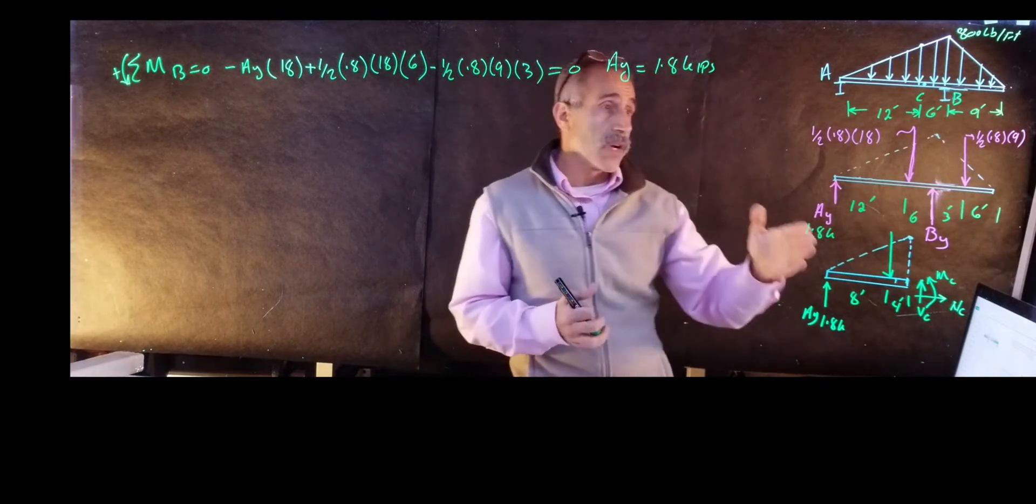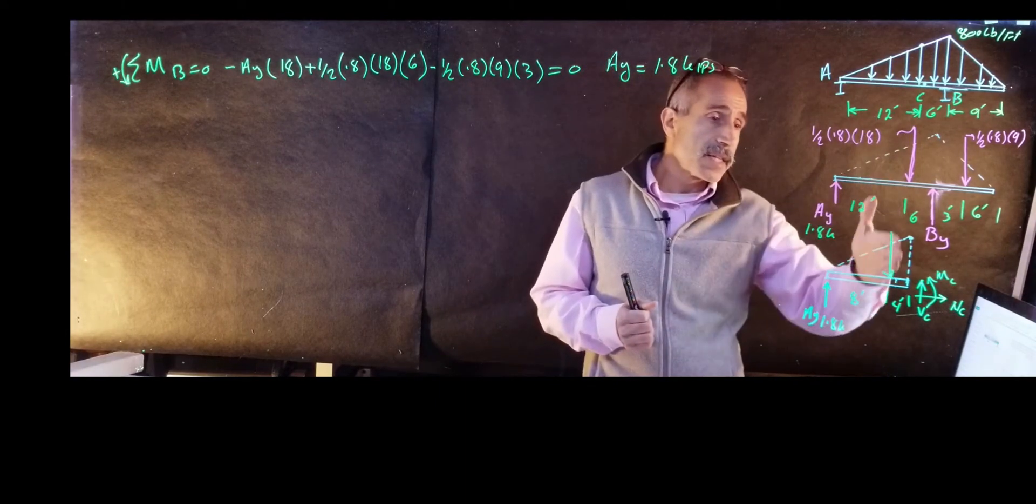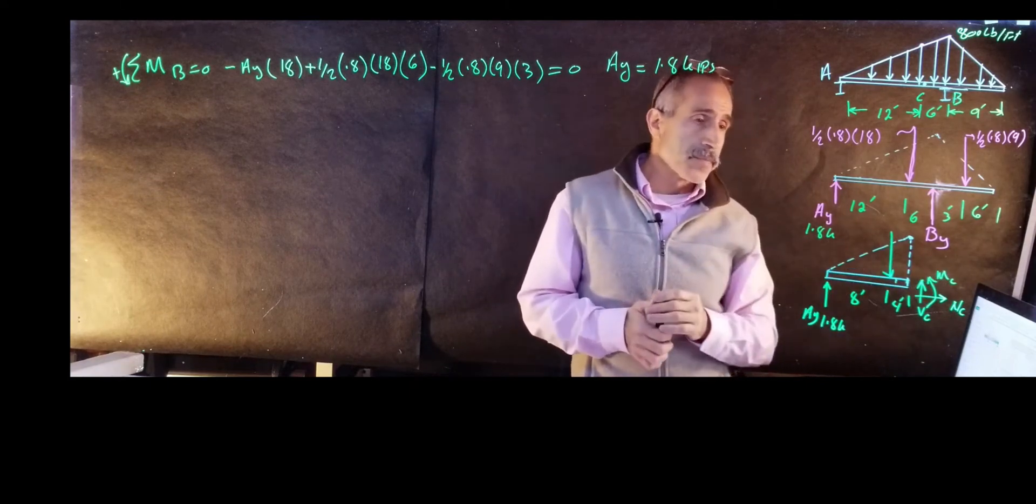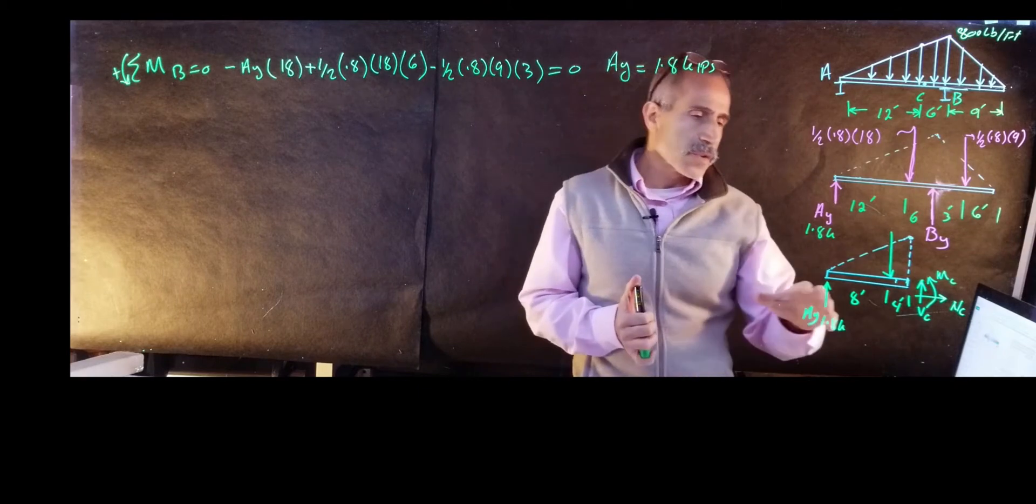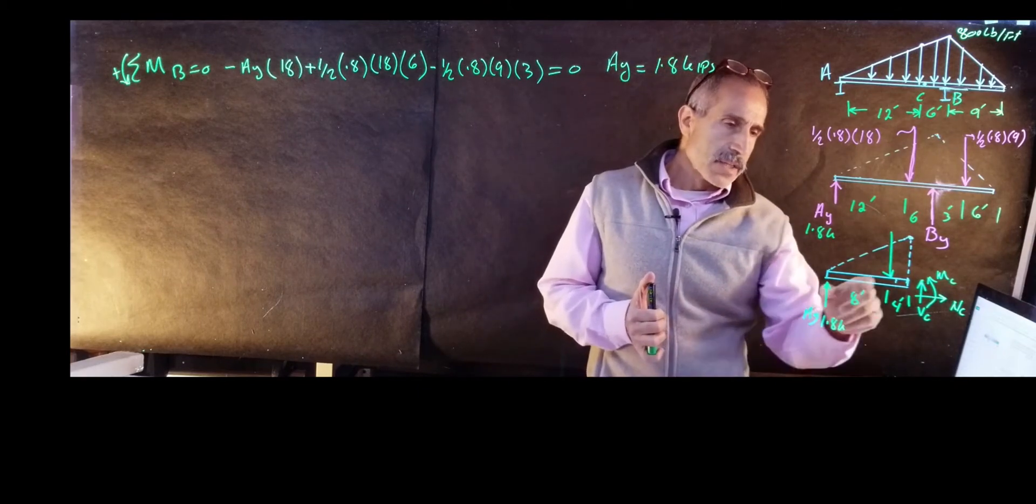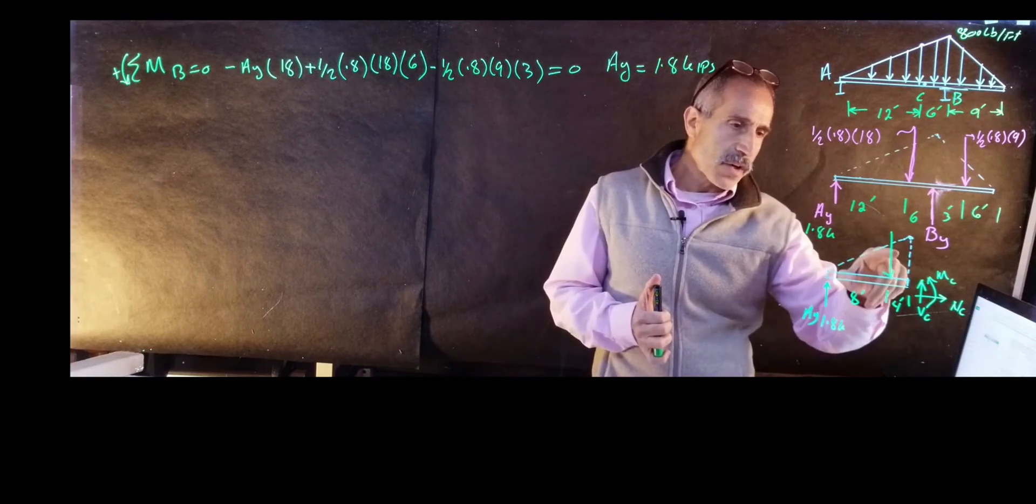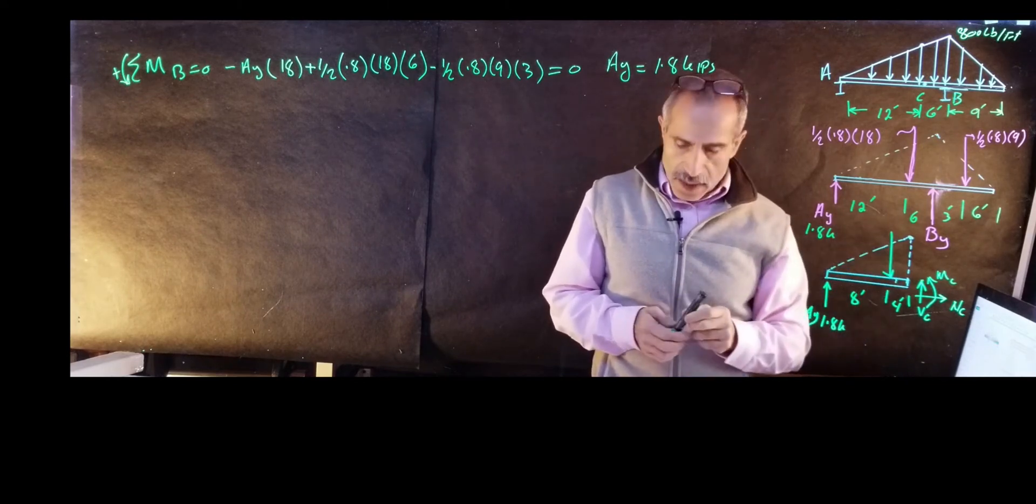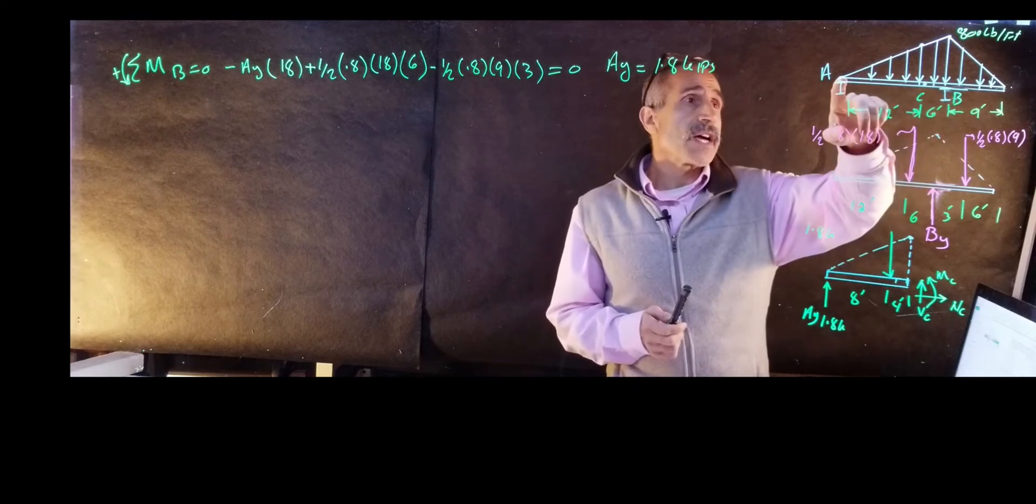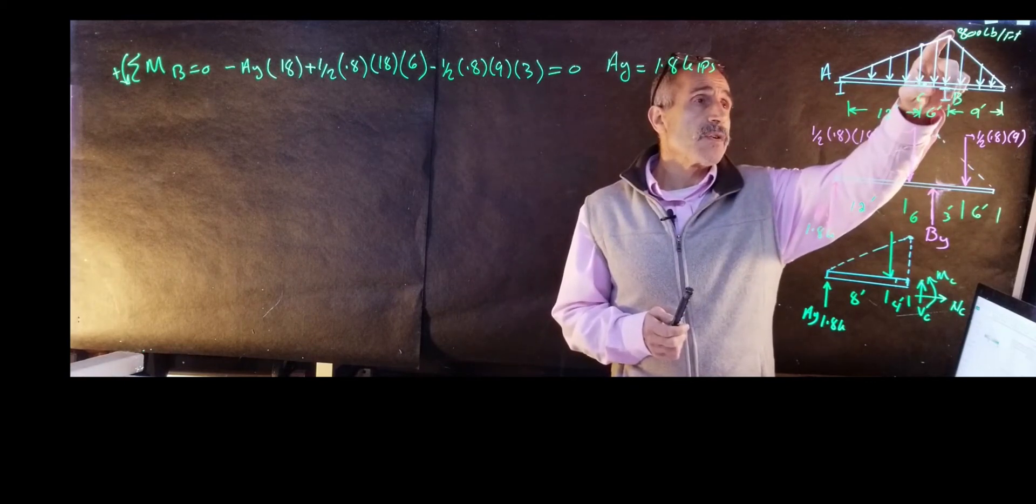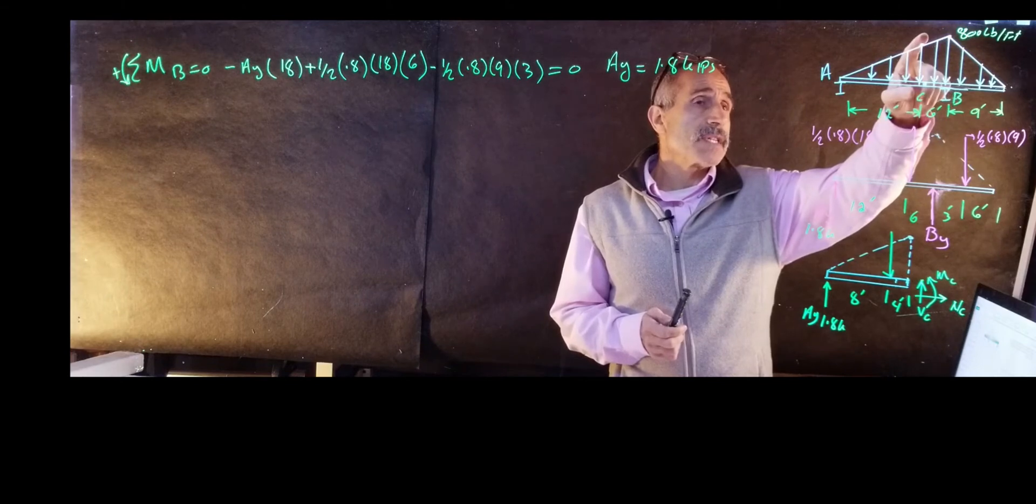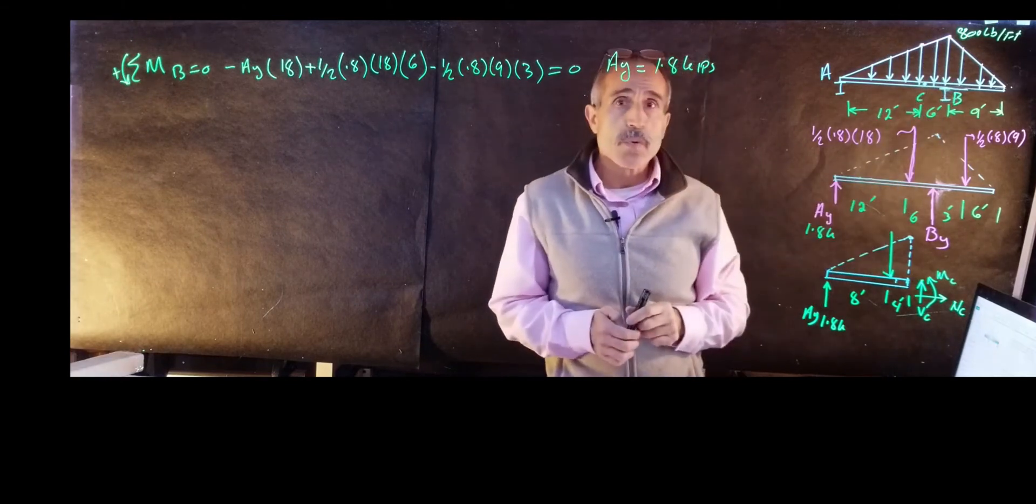What I'm going to do, I'm going to go ahead and cut the beam at point C right here. So I need all the forces on this side. When you cut all the forces here, we know AY. So we have to figure out this concentrated load. I got to know the magnitude of this triangle. I know the triangle is all the way up here is 0.8 or 800, but what is it at this point right here, point C?